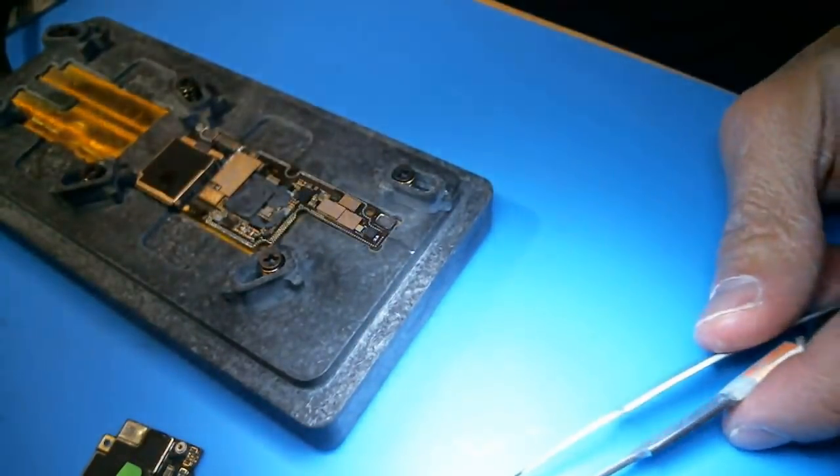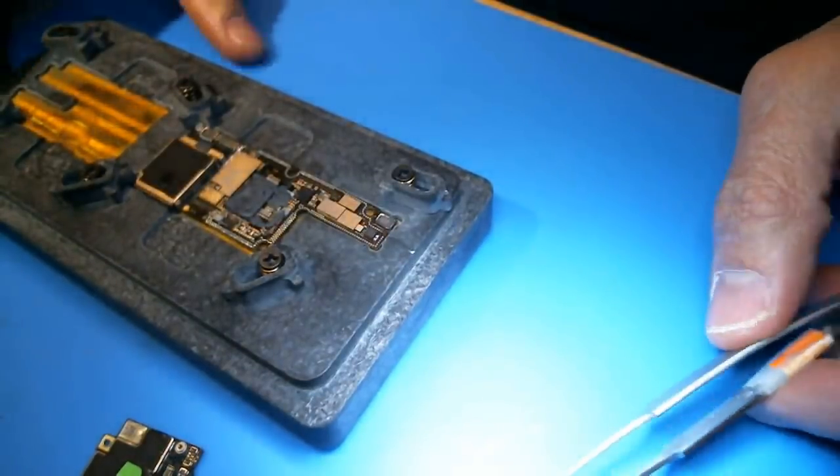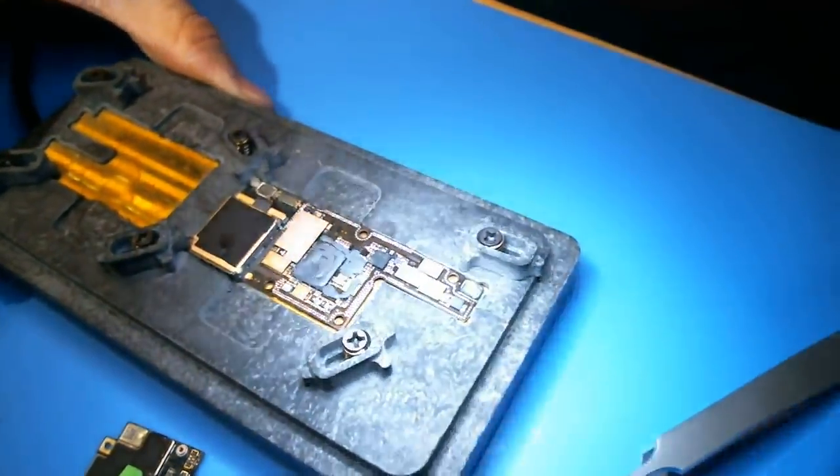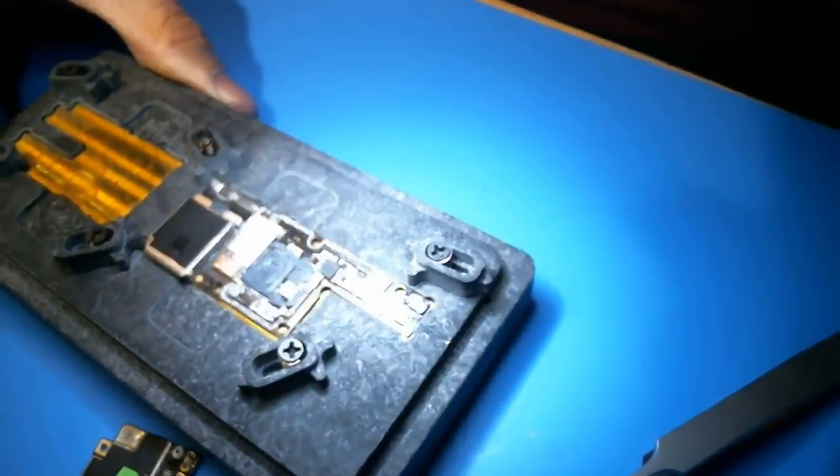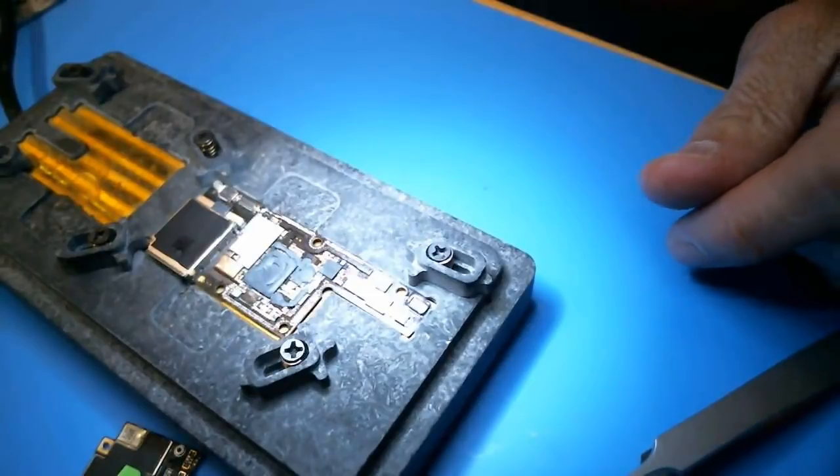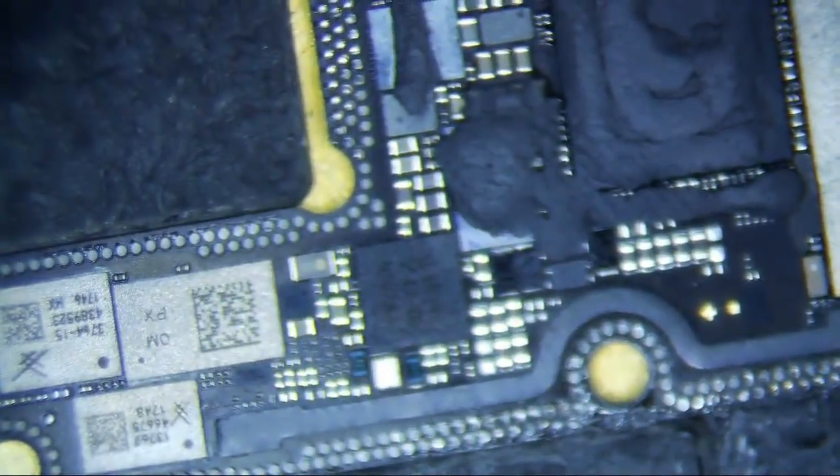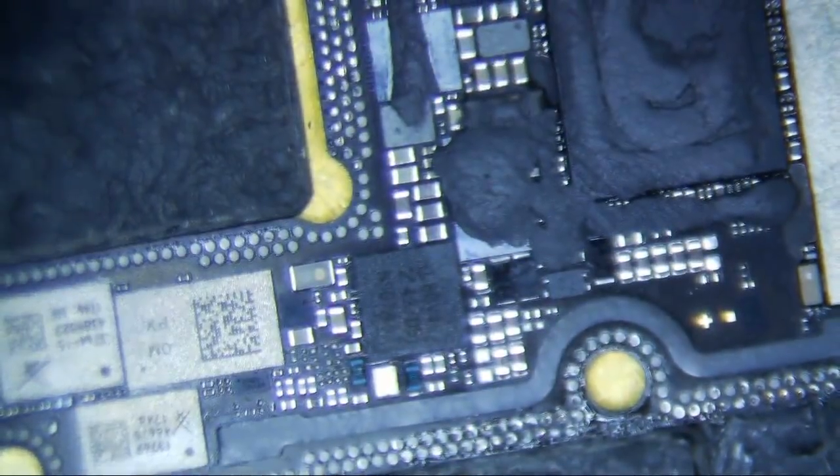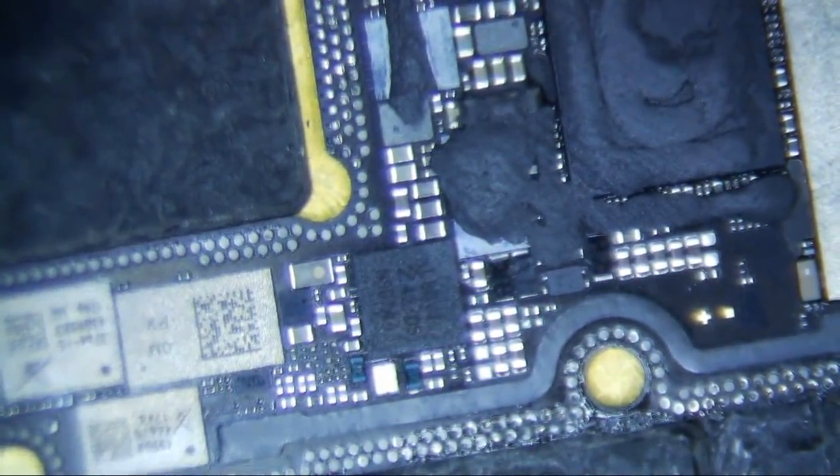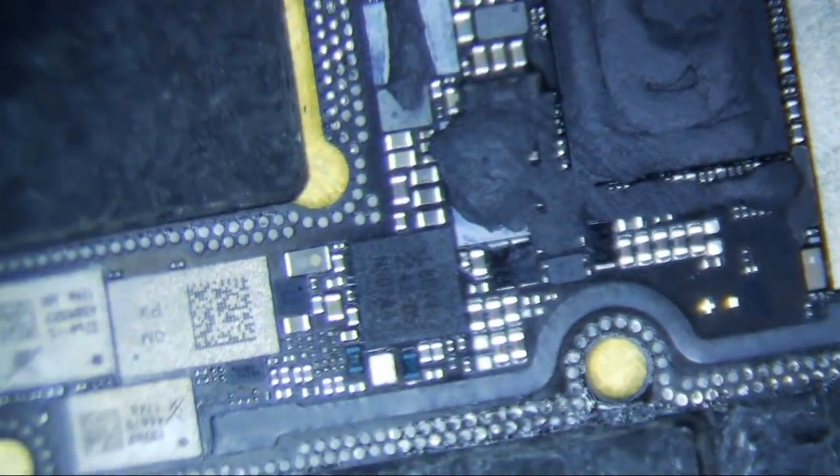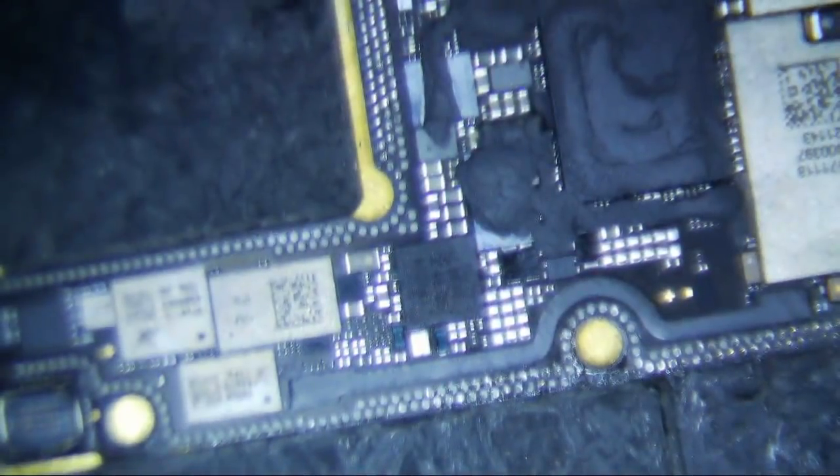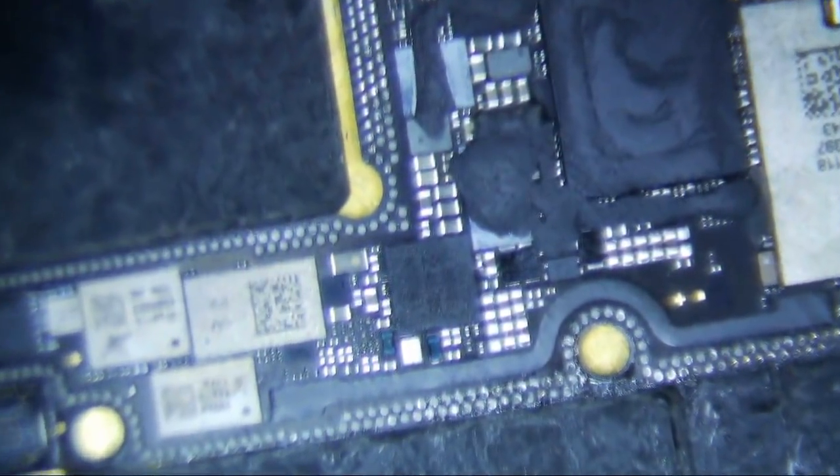Alright so the ring is off, looks like this thing works, this little add on tool that I have for my Quick 957DW. Let's look under the microscope and see if we can see torn pads. Looks so blurry doesn't it. Why is it so blurry? I feel like this thing is so high man, I don't know what's going on with my microscope dude.